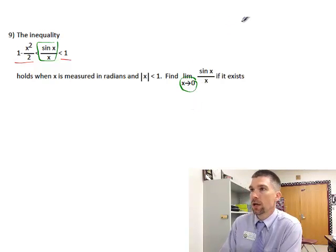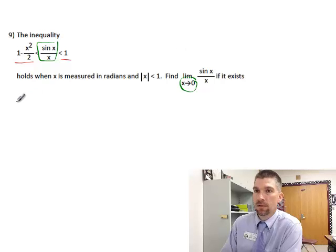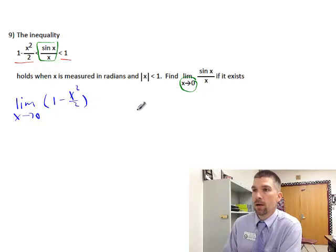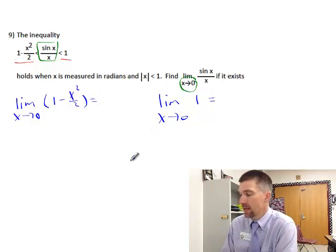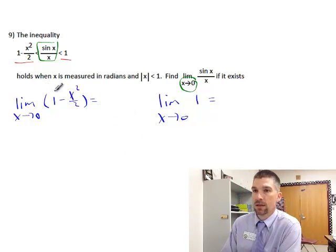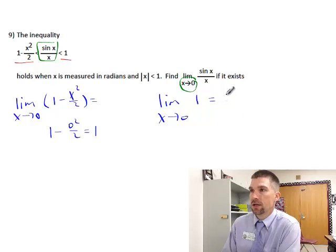What we're going to do is look at the limit as x approaches 0 of 1 - x²/2 and the limit as x approaches 0 of 1. We want to know if both of these equal. If they equal the same exact thing, then we know we're going to have a limit. When I plug 0 into this first equation, I get 1. The limit of a constant is just a constant.